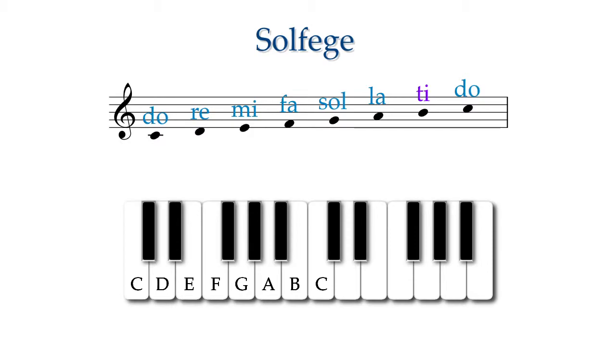Each note of the key also has a formal name that relates to its harmonic purpose, or function. The tonal center, the first note of the scale, is called the tonic. The fifth note of the scale, Sol, is called the dominant. Do not take this powerful name lightly. The dominant function does dominate our system of music.